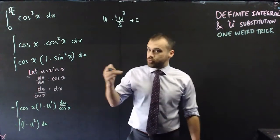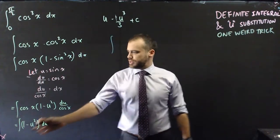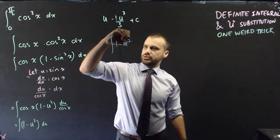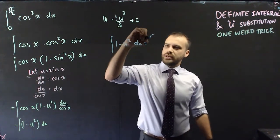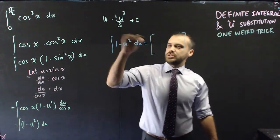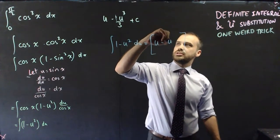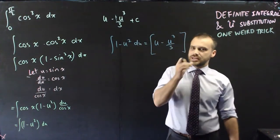Now from here, it's one weird trick time. So we're doing the integral of 1 minus u squared with respect to u. Now I'm going to write it as a definite integral, which is this bit here, u minus u cubed on 3. I don't need the plus c here.